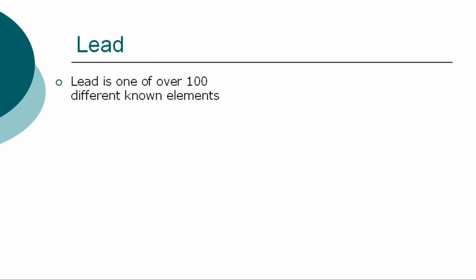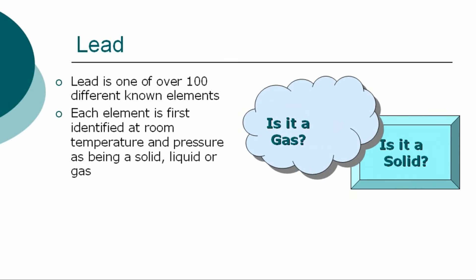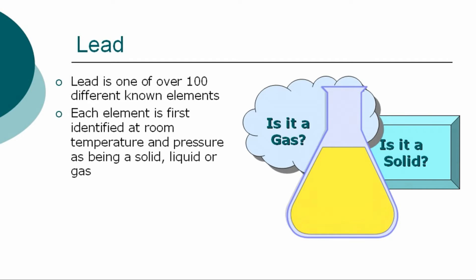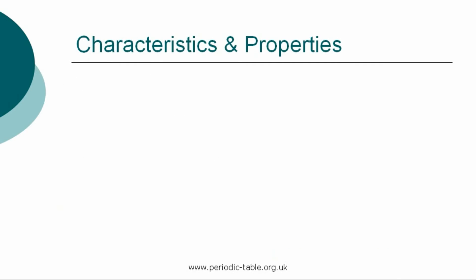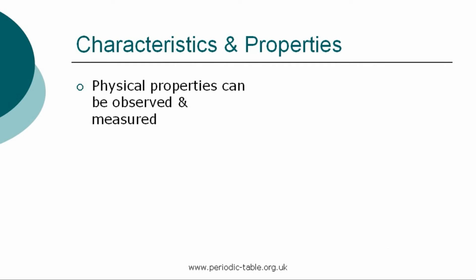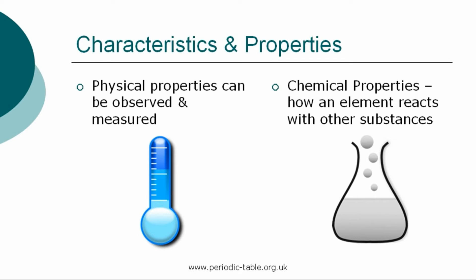The element lead is one of over 100 different chemical elements that are known to modern chemistry. Each element is first identified at room temperature and pressure as being a solid, liquid, or gas, referred to as states of matter. Lead is a solid at normal room temperature and pressure. Each element has physical properties that can be observed and measured, such as color, density, and odor. The chemical properties are the characteristics that determine how a substance will react with other substances, such as water or oxygen.